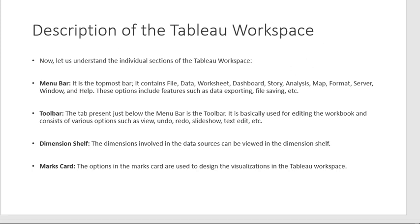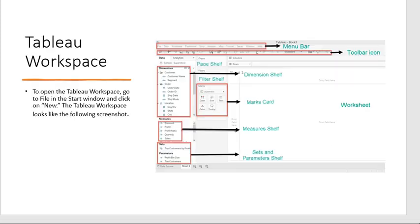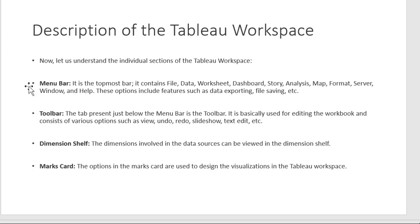Now let's understand each part of the workspace separately — what the menu bar does, what the toolbar does, and what the dimension shelf and marks card do. The menu bar is at the very top and contains File, Data, Worksheet, Dashboard, Story, Analysis, Map, Format, Server, Windows, and Help.